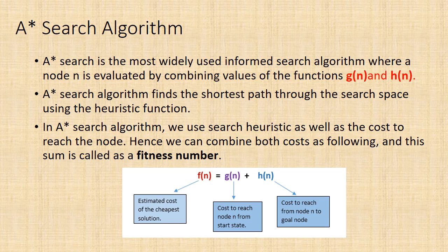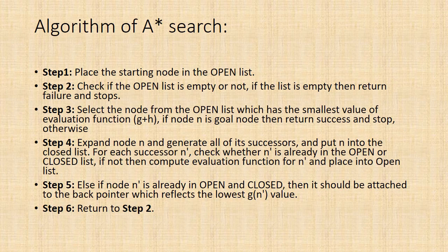In the A* search algorithm, we use search heuristic as well as the cost to reach the node. Hence we can combine both costs, and this sum is called a fitness number.